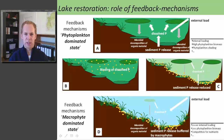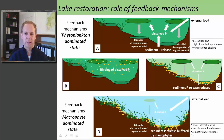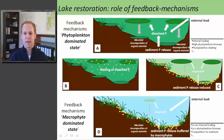The underlying concept of lake restoration in shallow lakes is that shallow lakes can exist, at least in theory, in two different stable states: one is a phytoplankton-dominated state and one is a macrophyte-dominated state. Both states are stabilized by various feedback mechanisms. In the phytoplankton-dominated state, the release of phosphorus from the sediment into the water column fuels the growth of phytoplankton. Phytoplankton shades out macrophytes, and after phytoplankton dies and decays, it settles to the sediment bed where it is mineralized so that the cycle can start again.